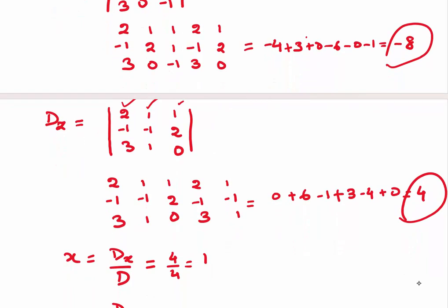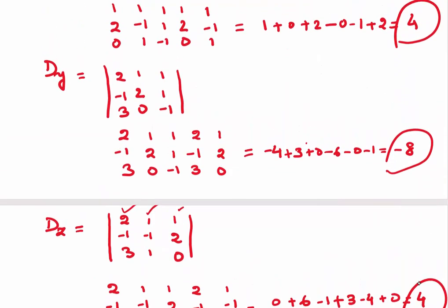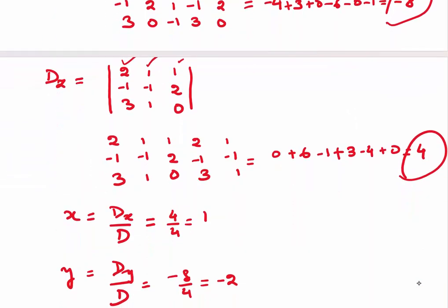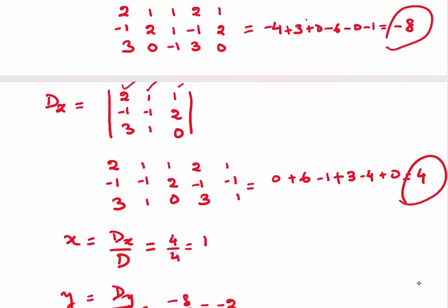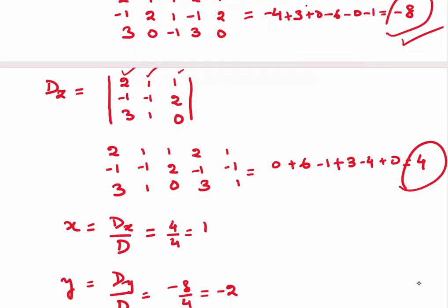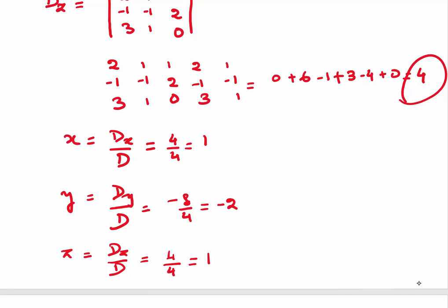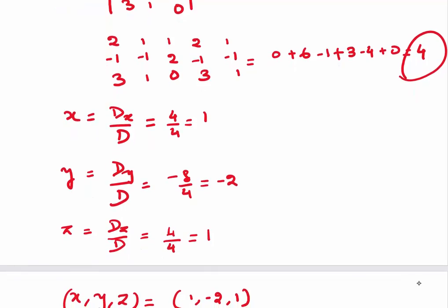Now x is dx divided by d, which is 4 divided by 4, since the determinant value was 4 and dx was also 4. x comes out to be 1. y is dy divided by d, which is minus 8 divided by 4, and that comes out to be minus 2. In the same way, z is dz divided by d, which comes out to be 1. So our solution is x equals 1, y equals minus 2, z equals 1.